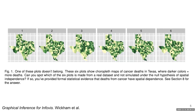Data visualizations can also have some particularly surprising utility. For example, you can perform null hypothesis testing with data graphics. Here we have six maps that show how cancer deaths are distributed across Texas. Five of the graphs show randomly generated data under the null hypothesis, and one of the graphs shows the real data. Can you guess which one of the graphs shows the real data? If so, type the number corresponding to the real graph in the chat. And congratulations, you just performed a hypothesis test.